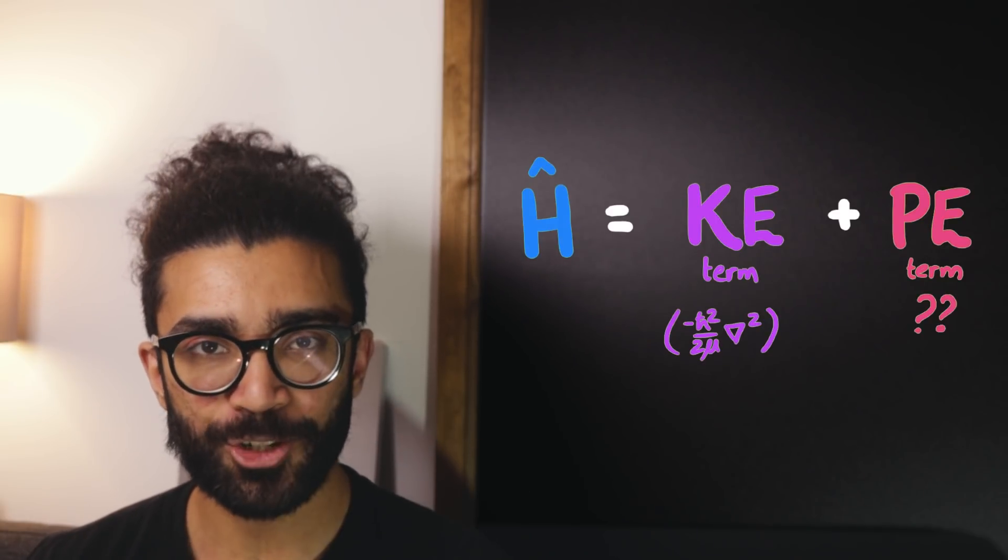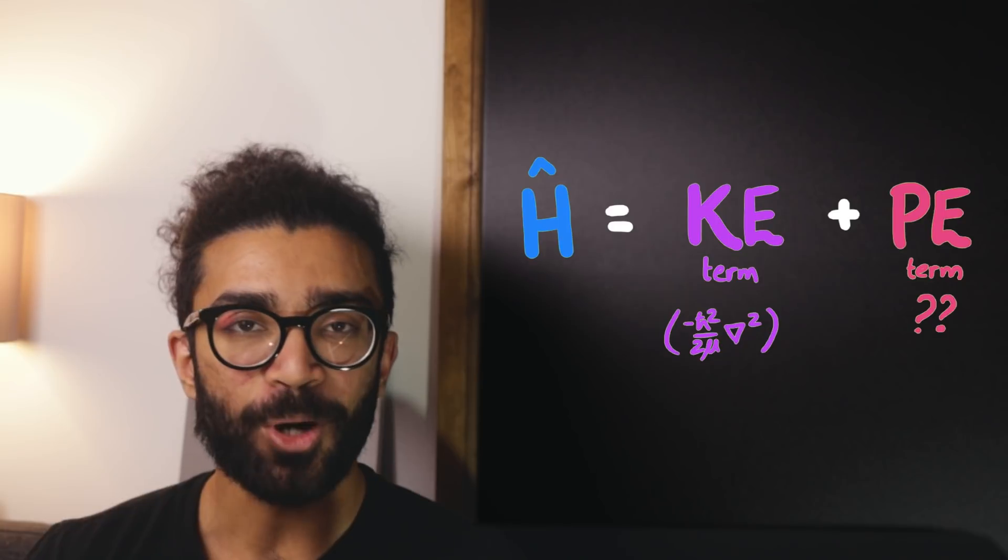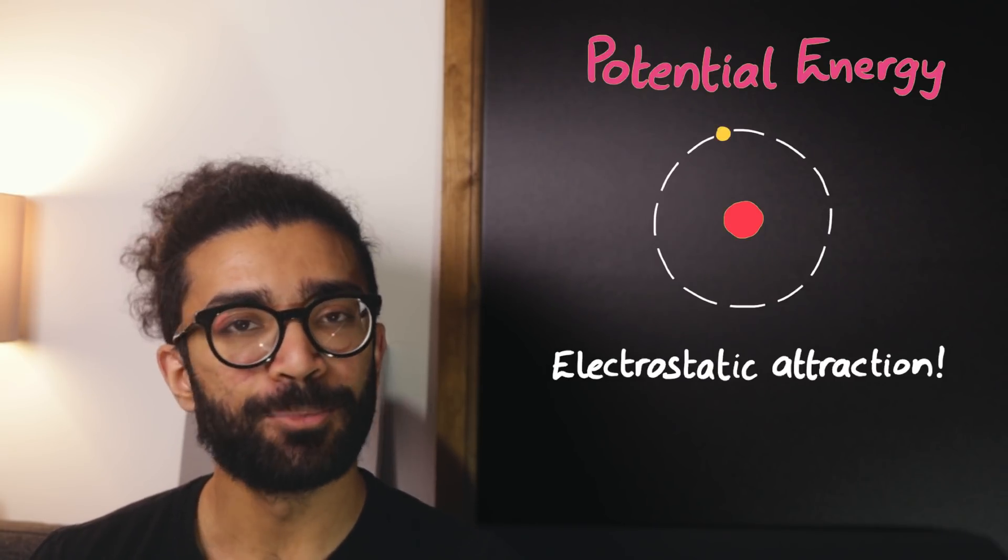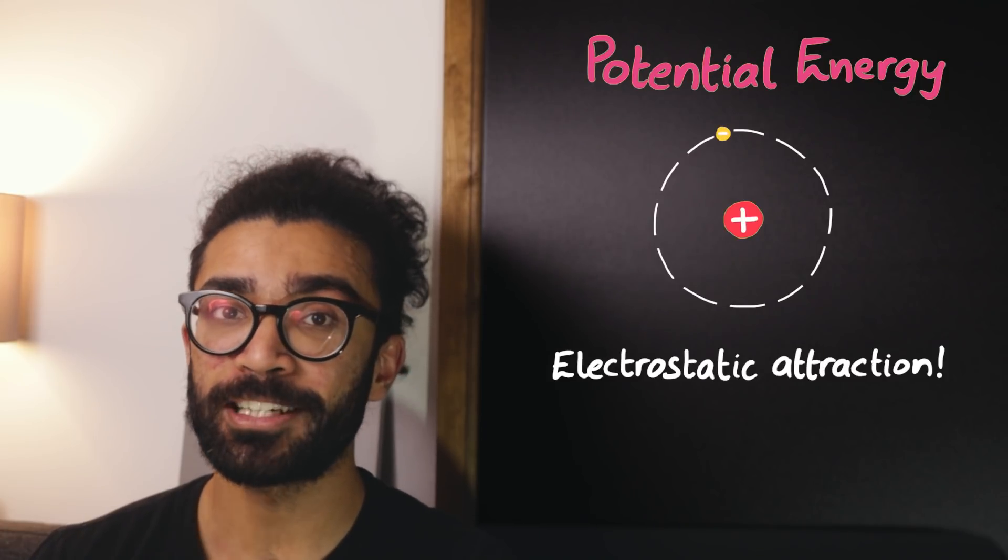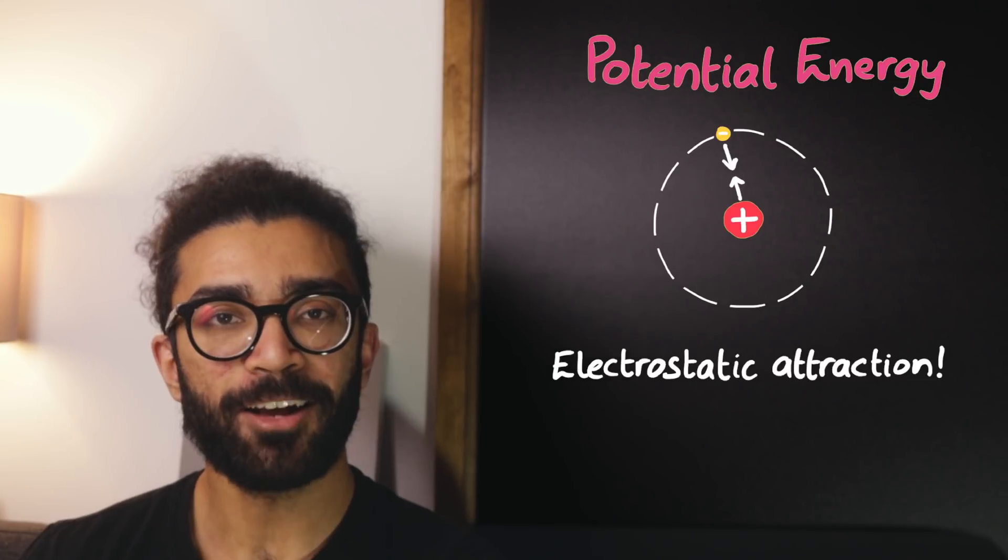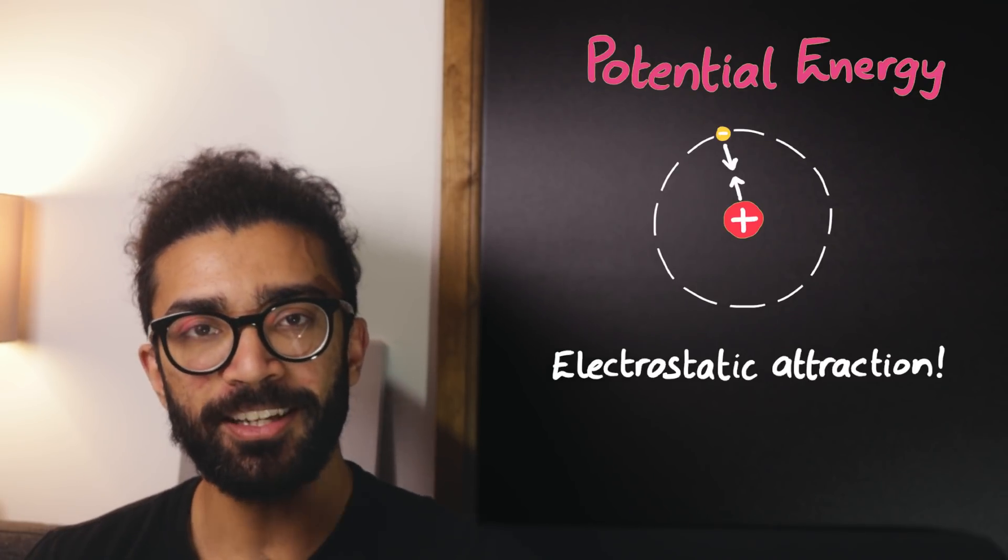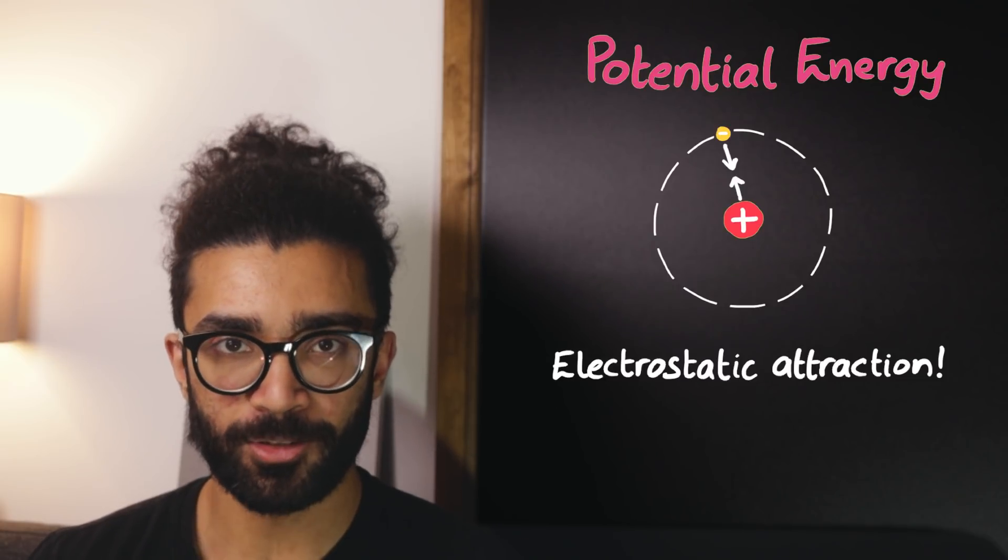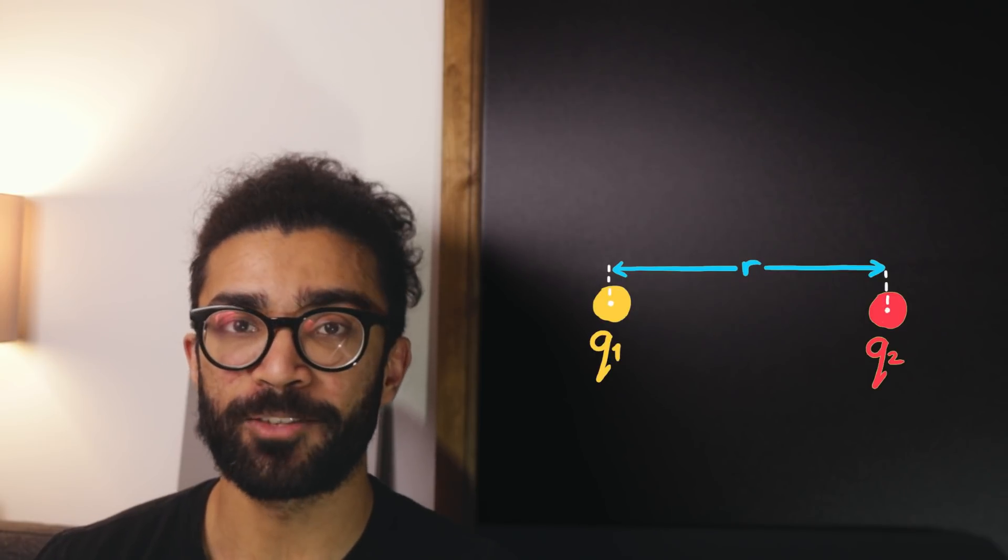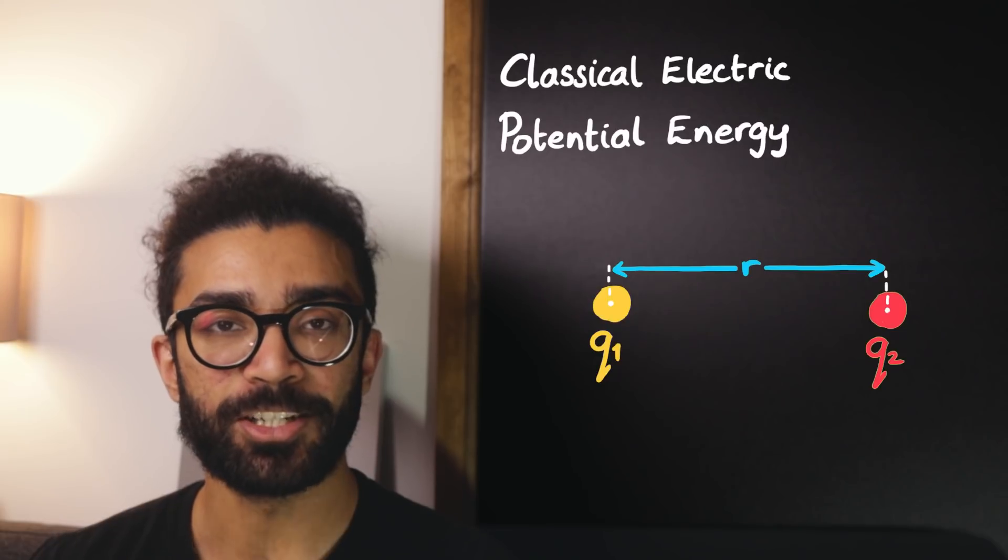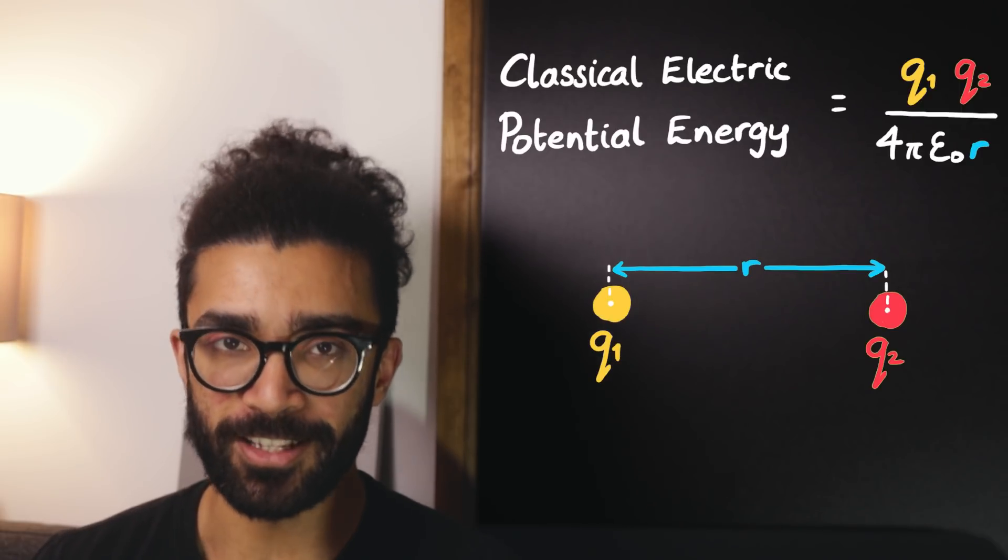Let's now talk about the potential energy of our system. The most obvious form of potential energy in this system is the electrostatic attraction between the two particles. They're oppositely charged particles, and charged particles interact with each other. To calculate this potential energy, we can steal the classical equation directly. For two charged particles, charges q1 and q2, a distance r apart from each other, or more specifically, the centres of mass are a distance r apart from each other.